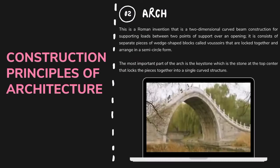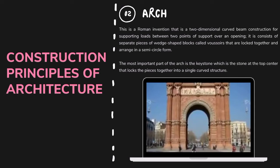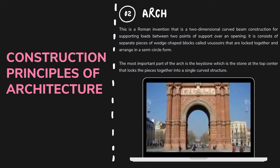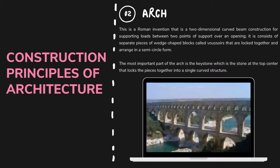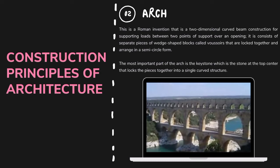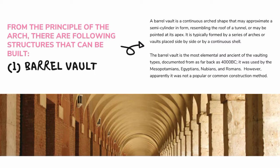Arch. This is a Roman invention — a two-dimensional curved beam construction for supporting loads between two points of support over an opening. It consists of separate pieces of wedge-shaped blocks called voussoirs that are locked together and arranged in a semicircular form. The most important part of the arch is the keystone, the stone at the top center that locks the pieces together into a single curved structure. From the principle of the arch, the following structures can be built.